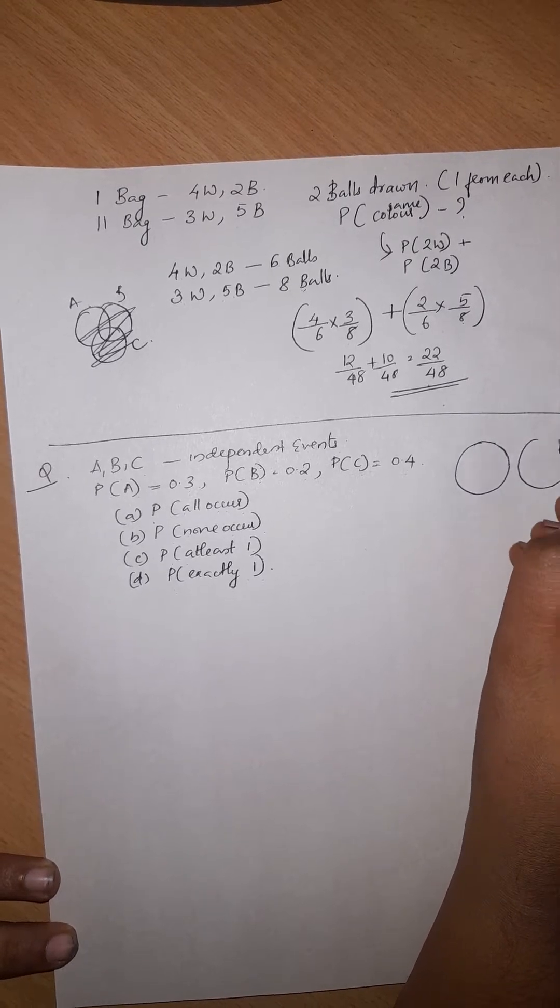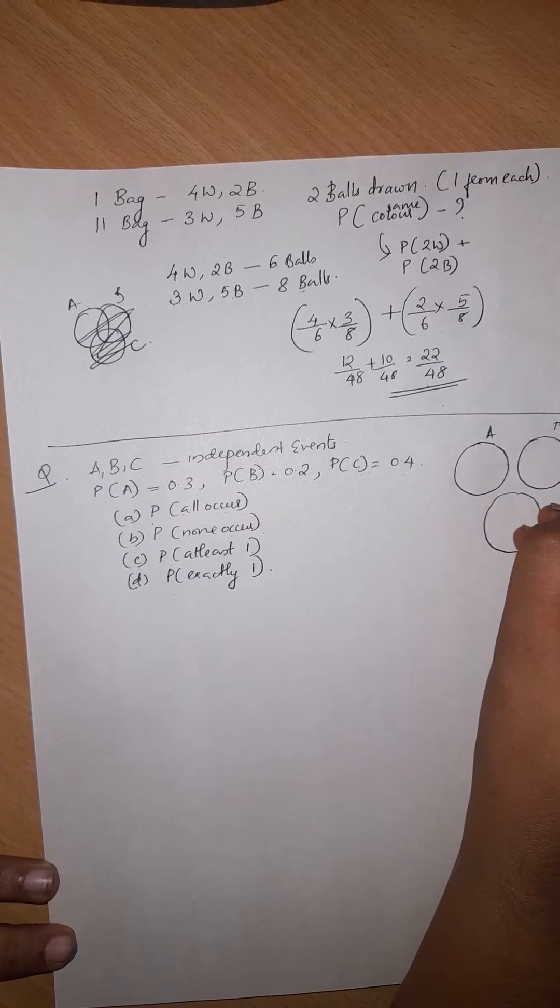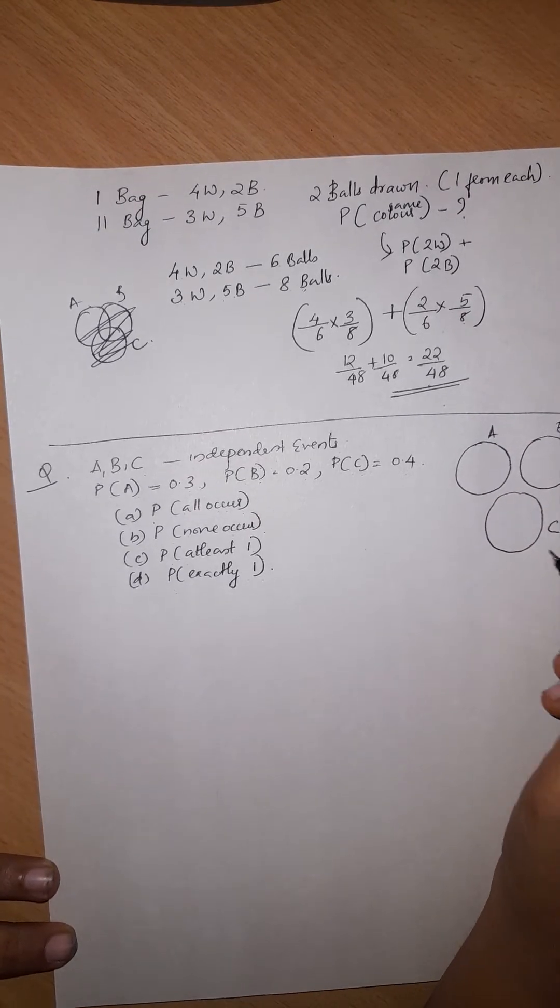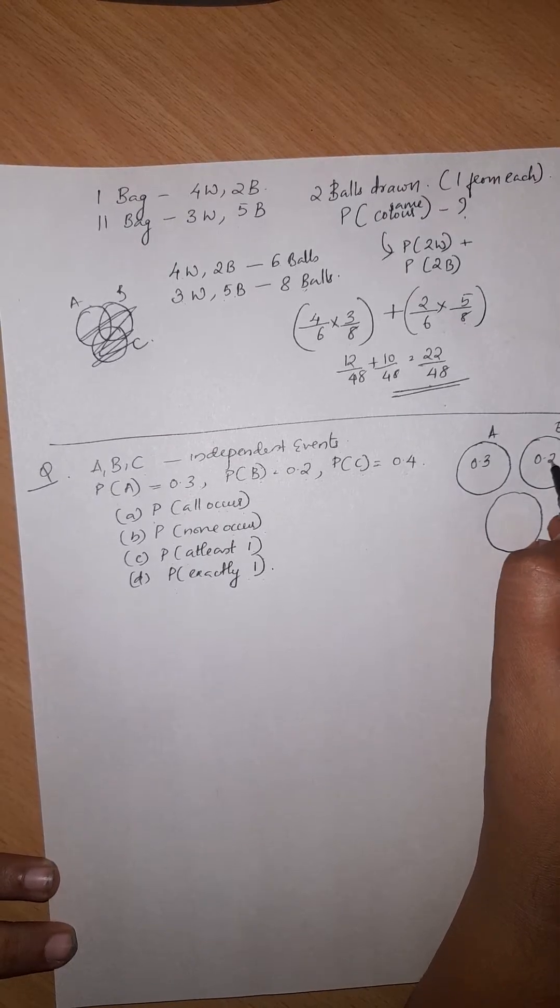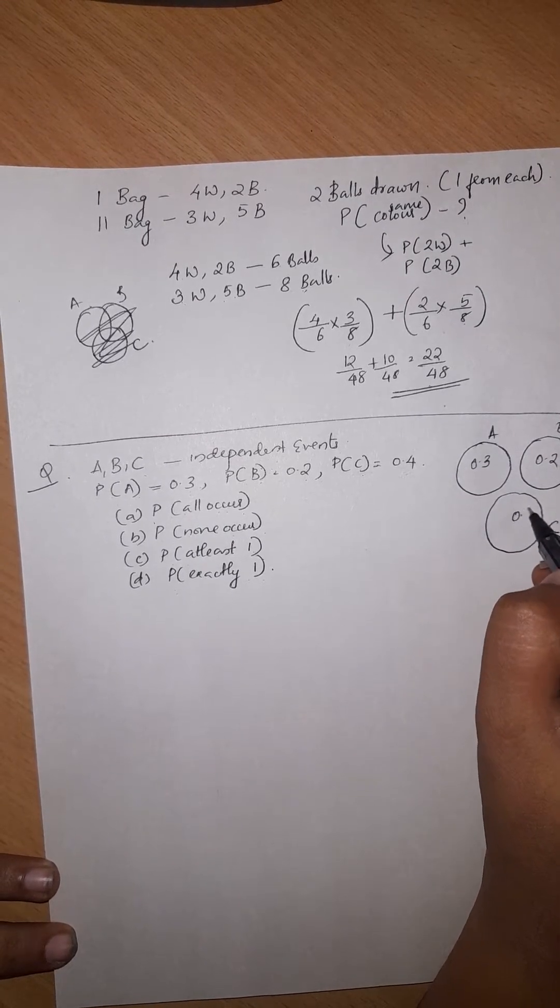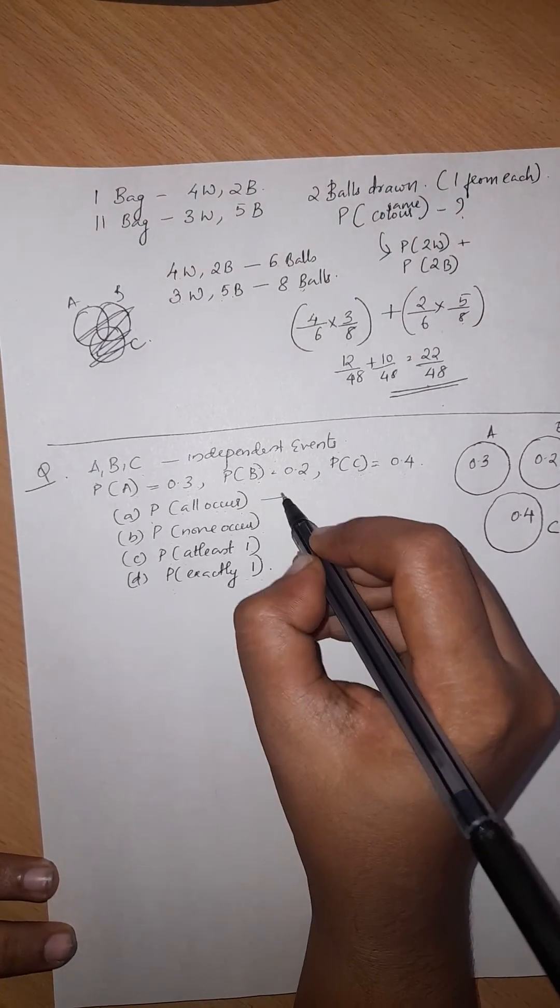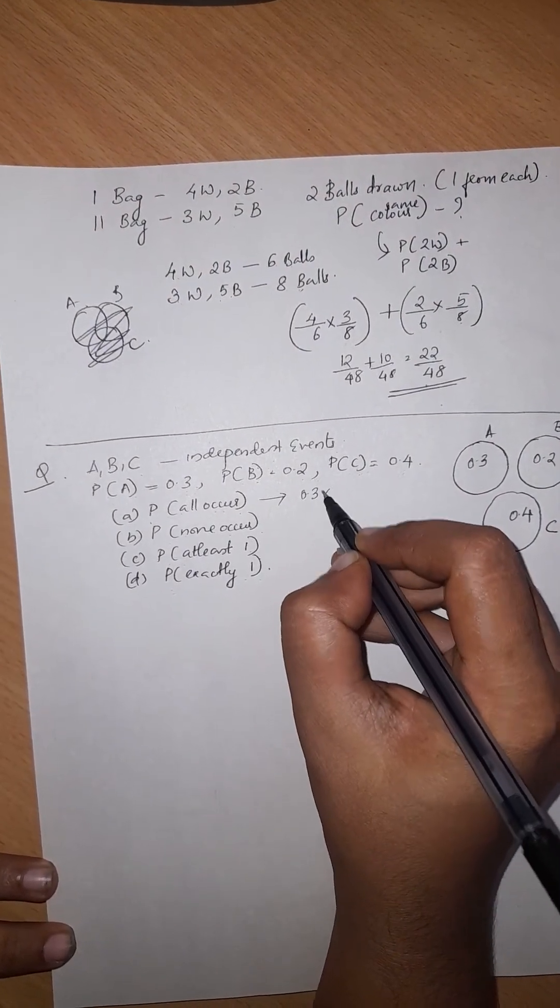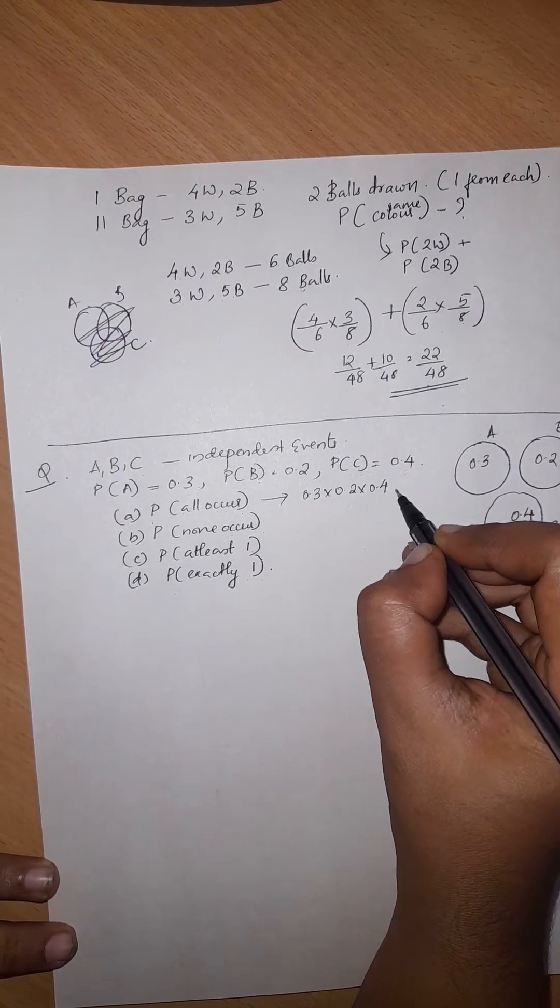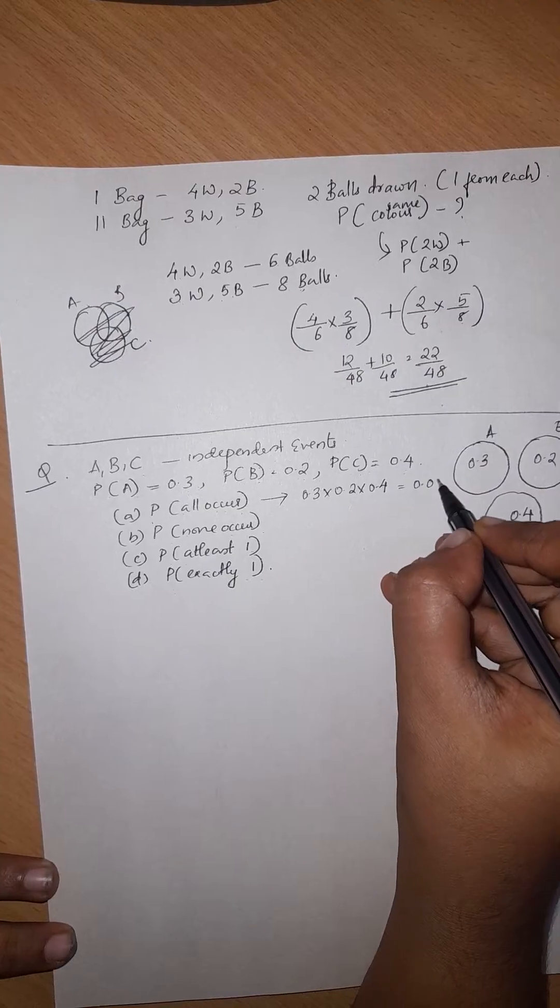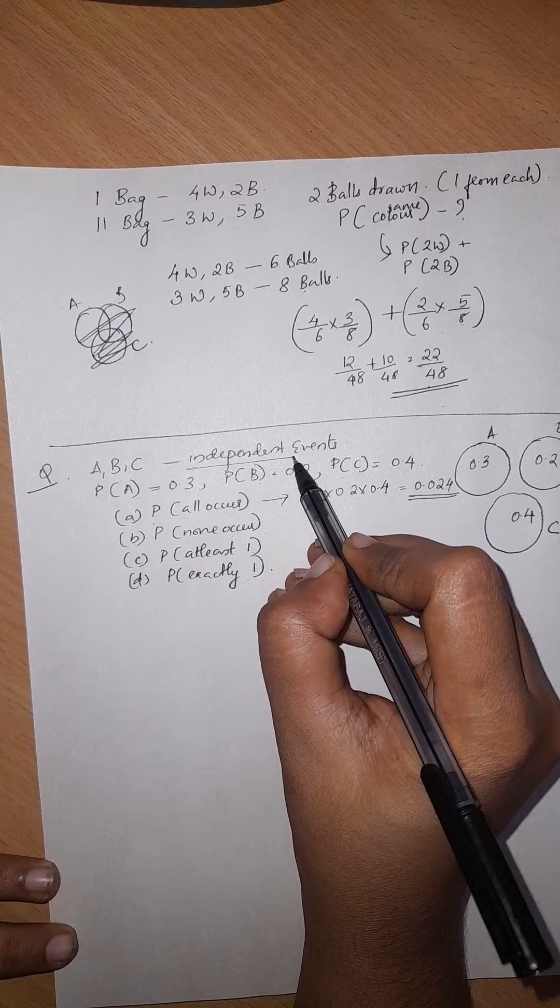What is the probability that all occur? 0.3 into 0.2 into 0.4, that is equal to 0.024. This is probability of all occur. Independent is independent, independent is the case that we have.